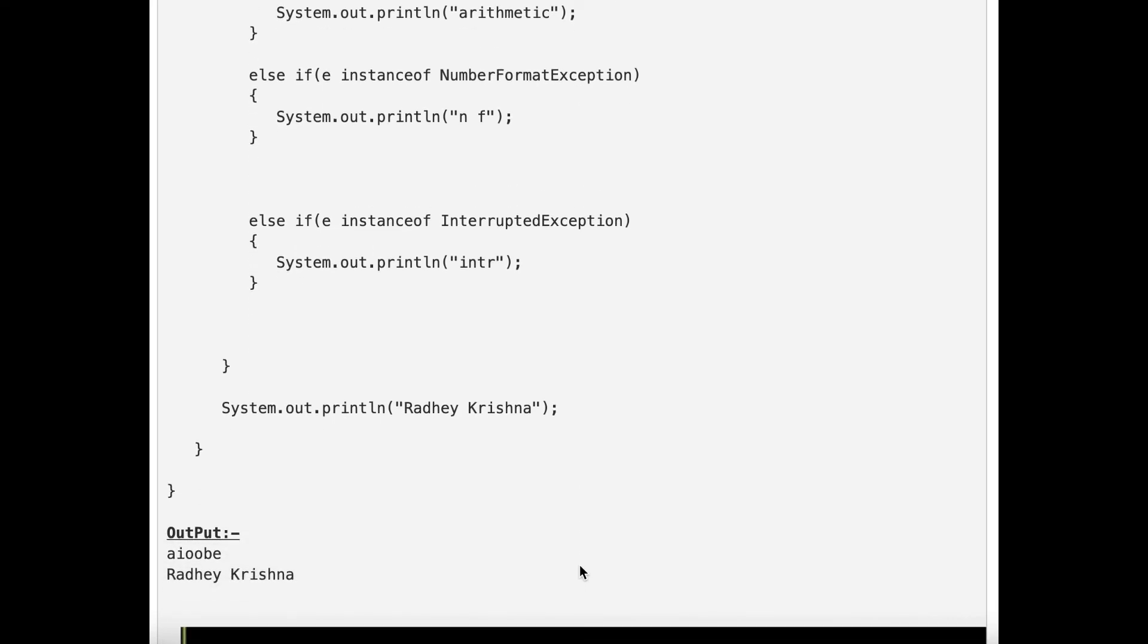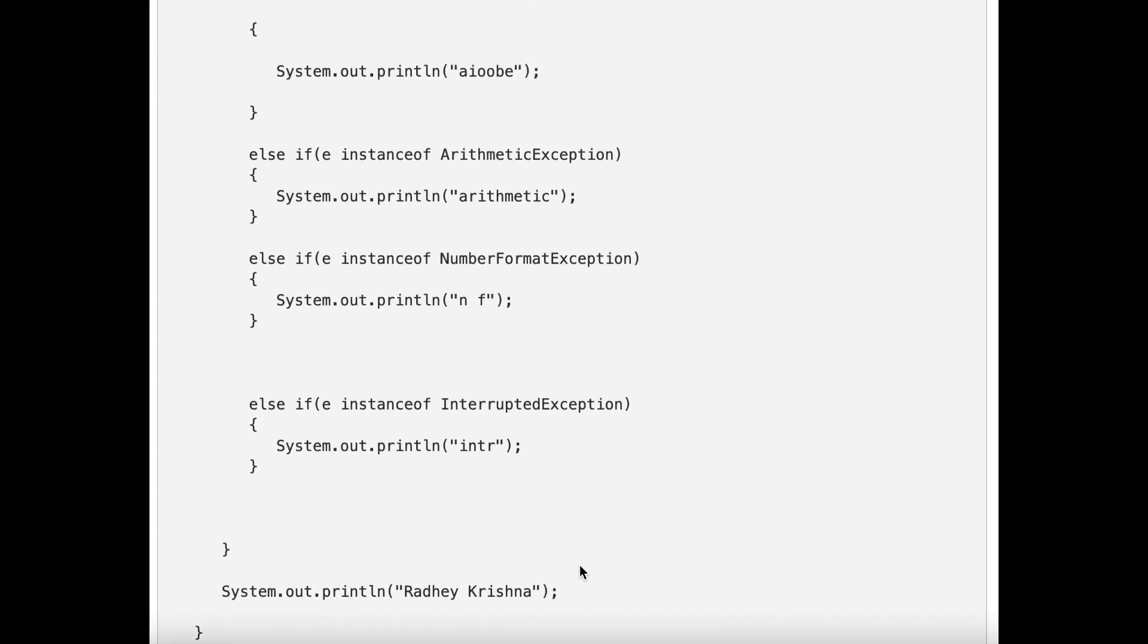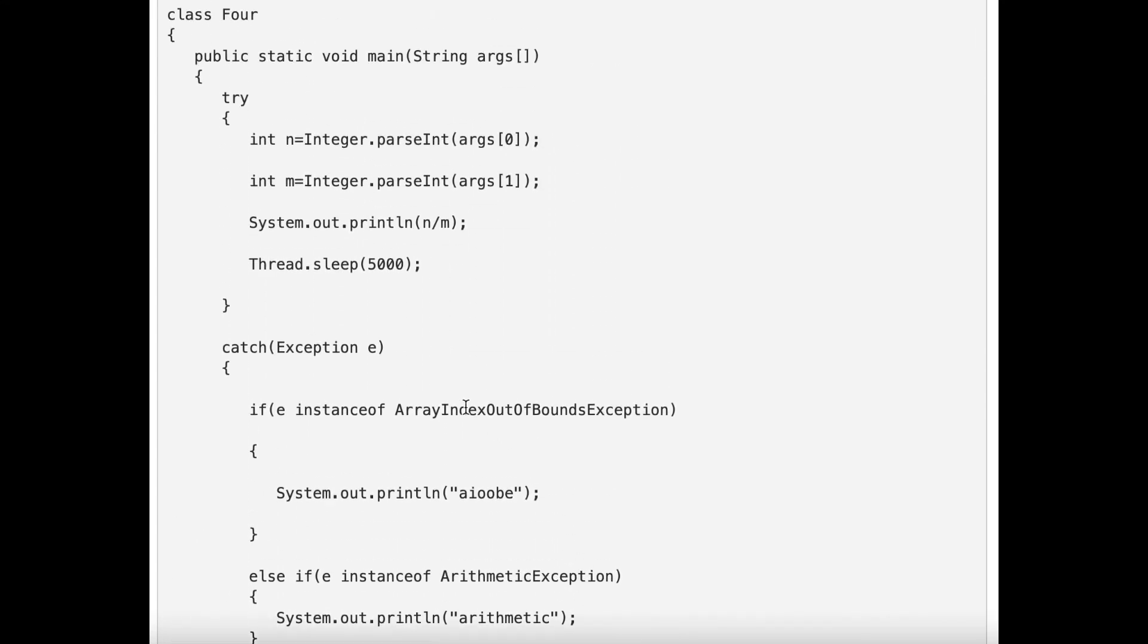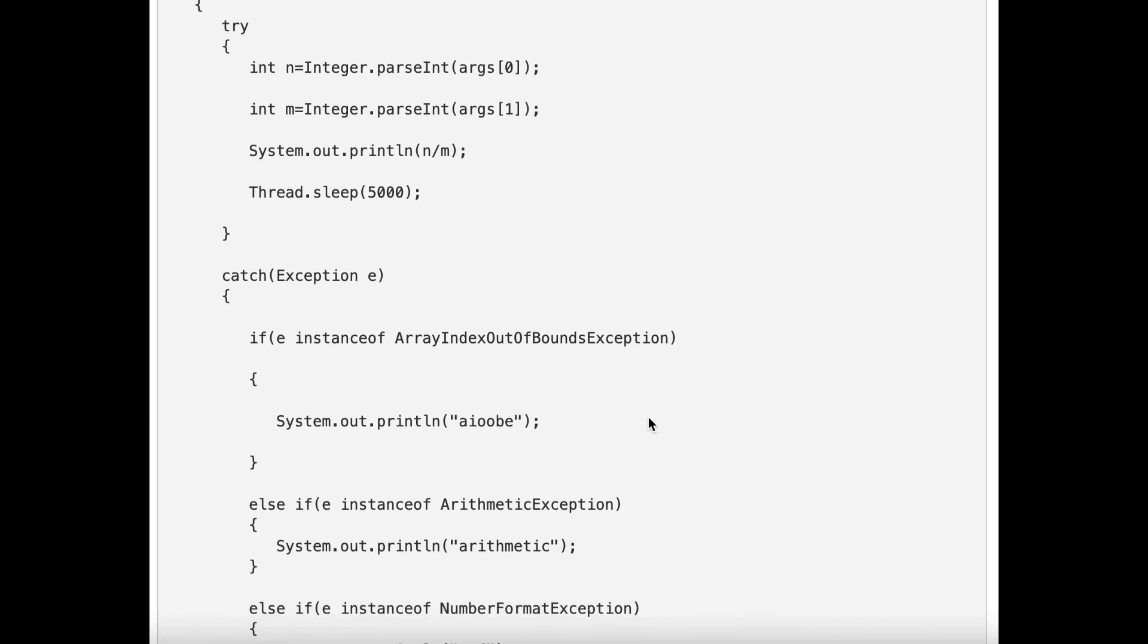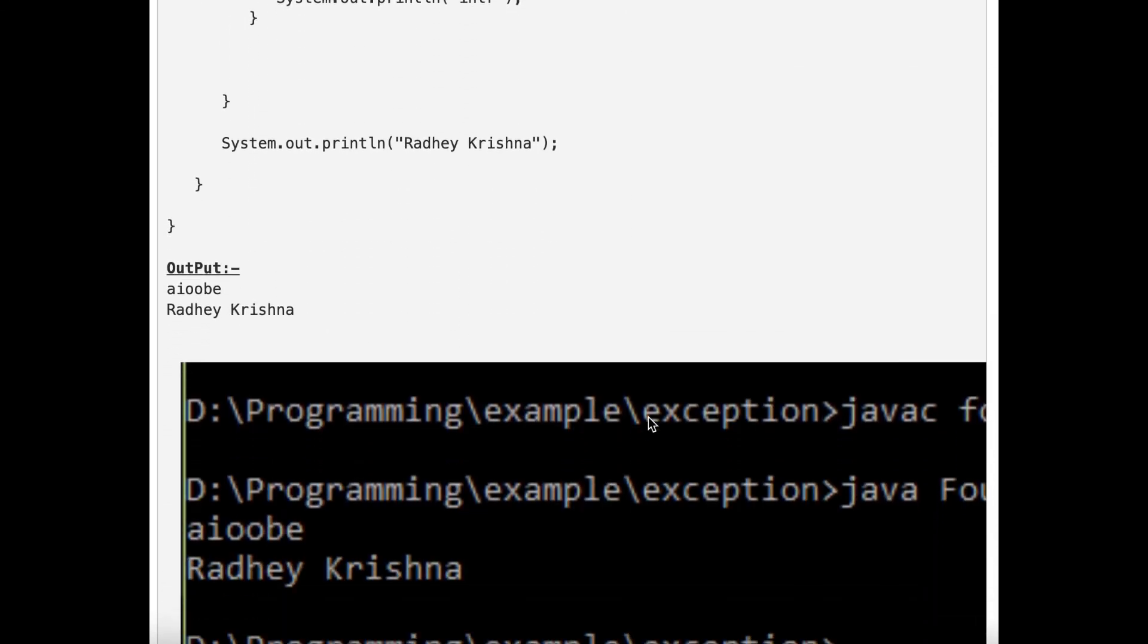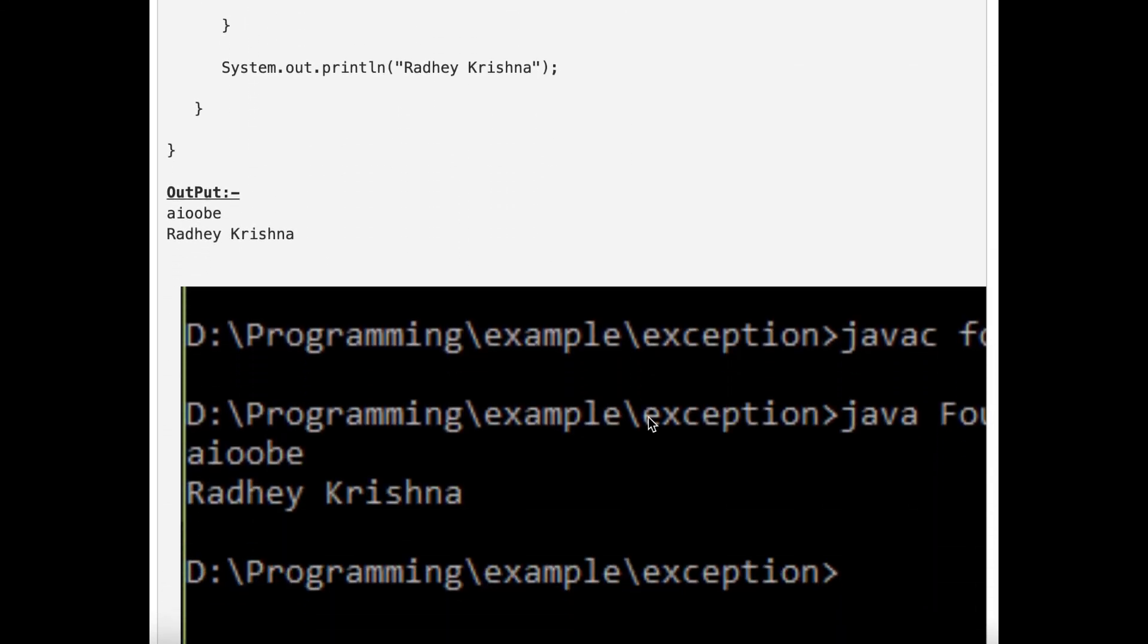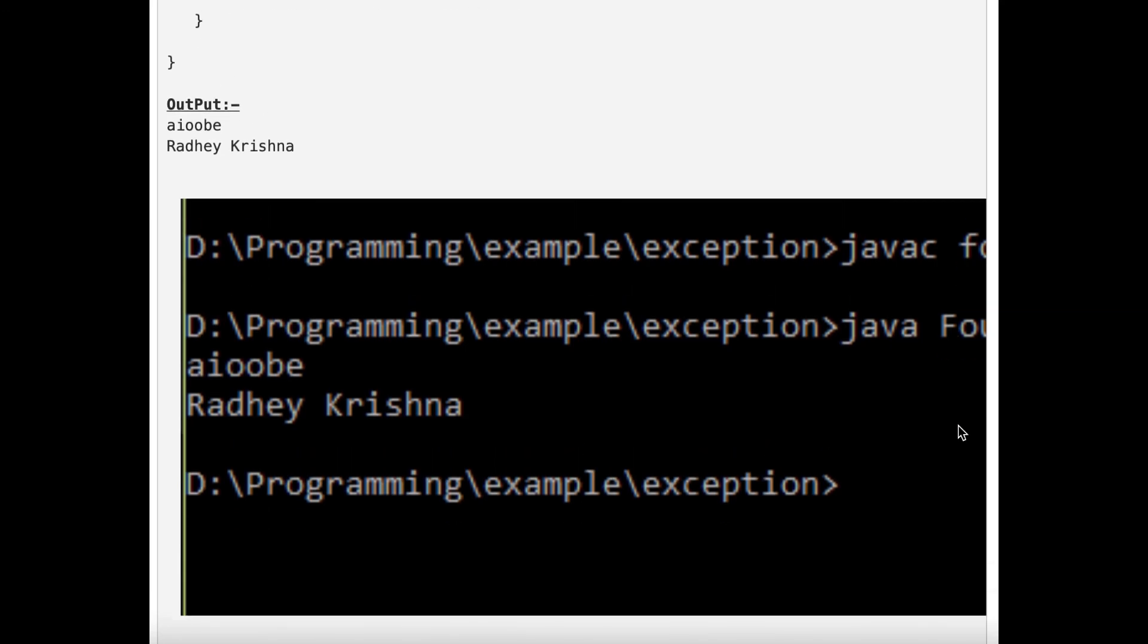Now we have array out of index, index out of bound exception. Why? Let's see what input we have added. We have added javac and then java. After the javac, we have added some value and then the value is exceeding the value. That's why it is giving the error.